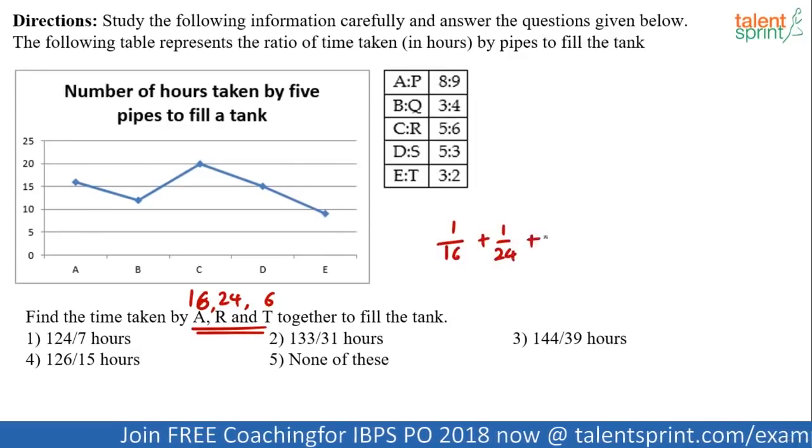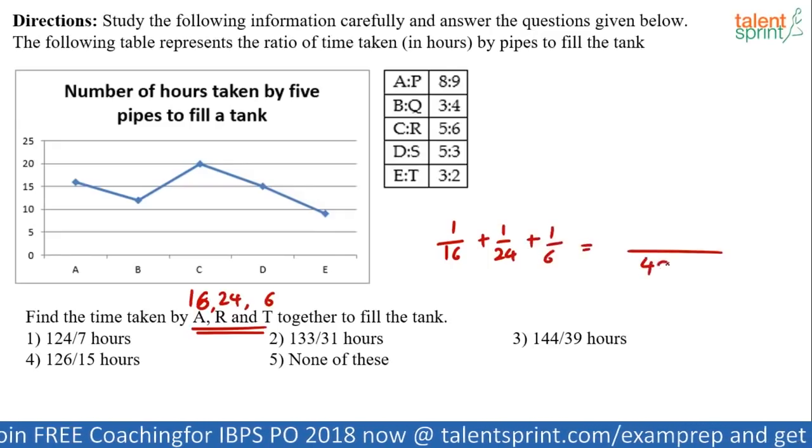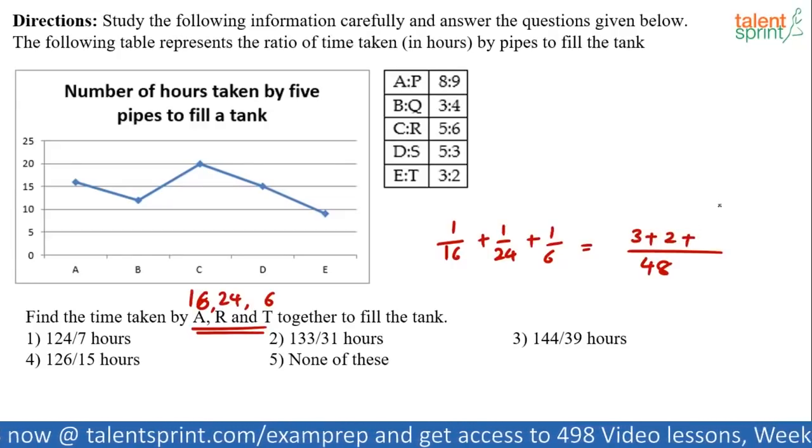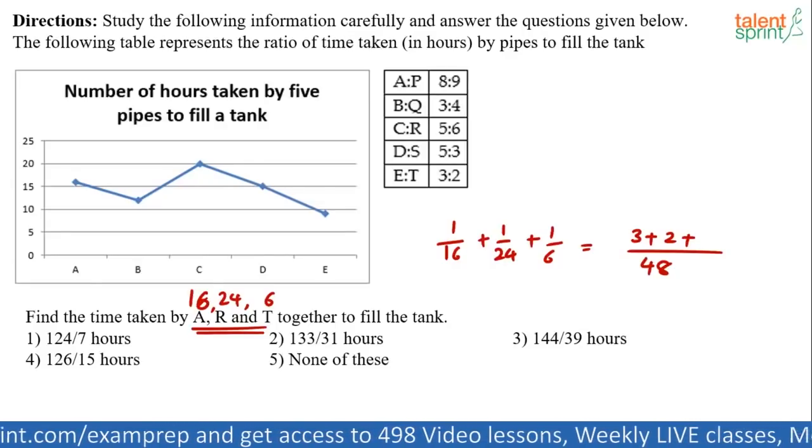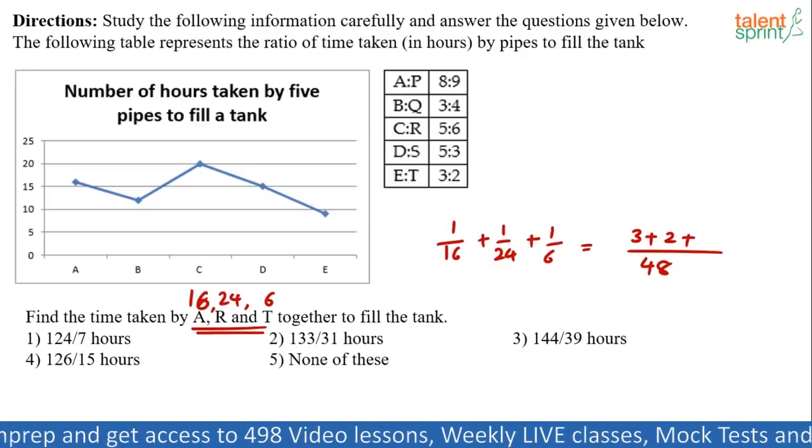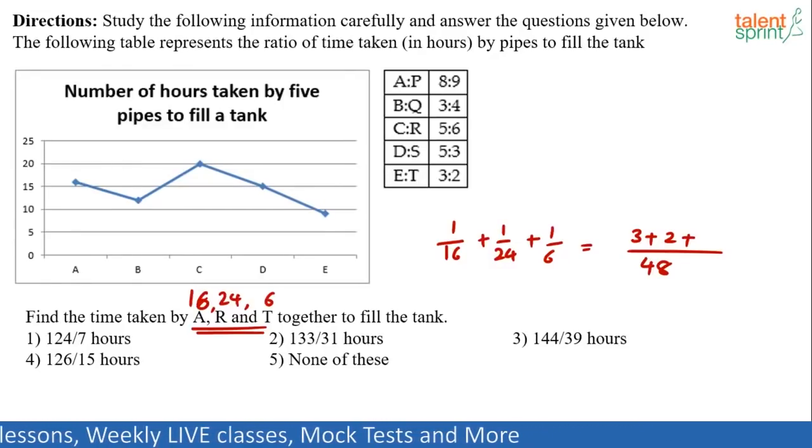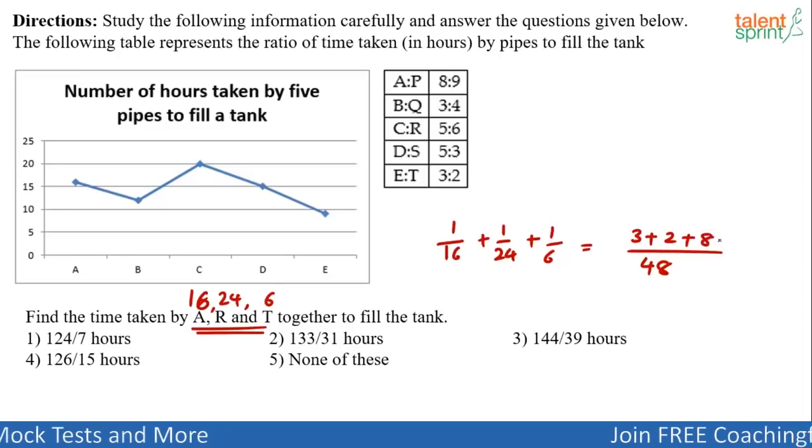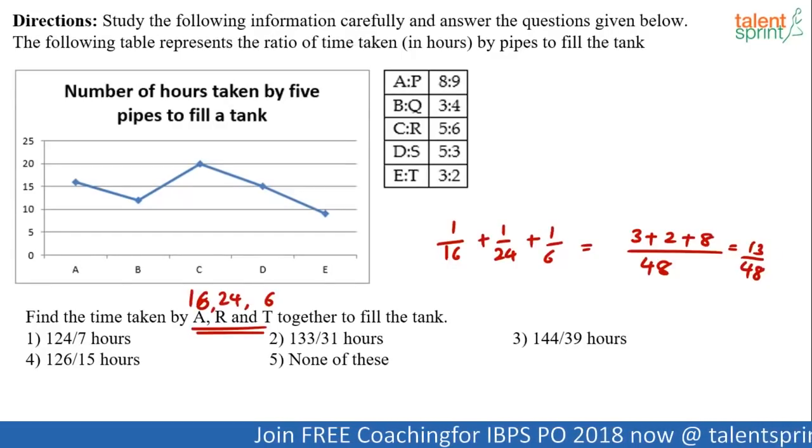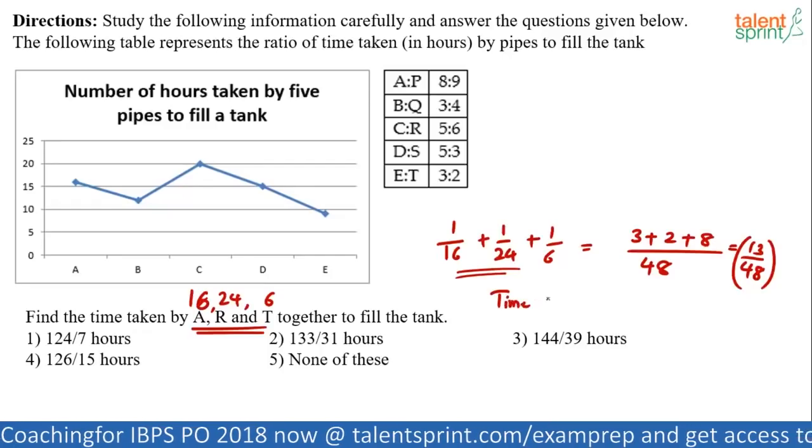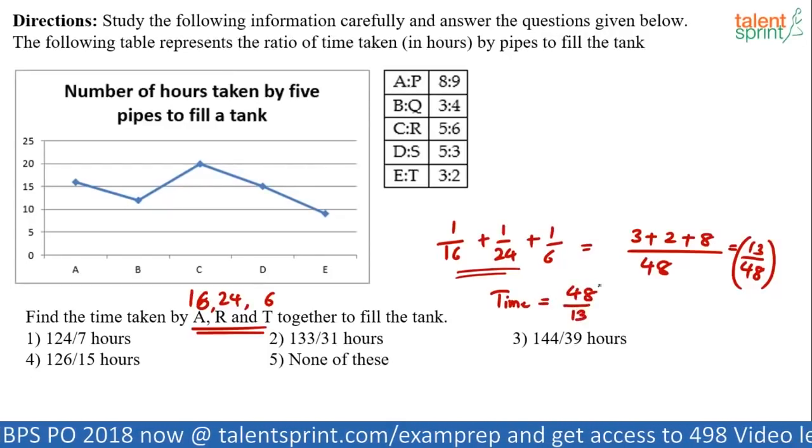Simplify. What happens? Simple calculation. 1 by 16 plus 1 by 24 plus 1 by 6. I think 48 can be the common multiple. The common multiple is 48 everywhere. 16 goes 3 times. 24 goes 2 times. 6 goes 8 times. 13 by 48. So, this is the total capacity. When A, R and T are working together, the total capacity is 13 by 48 which means time required is 48 by 13.